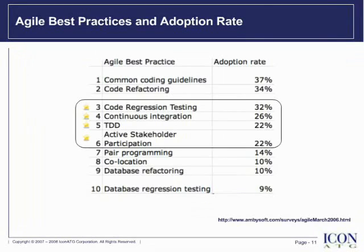I'll start with Continuous Integration. If your team has to stop to manually create and test the build, it will impact their velocity. Make your build self-testing, commit code every day, test in a clone environment, and allow everyone to see the build results.